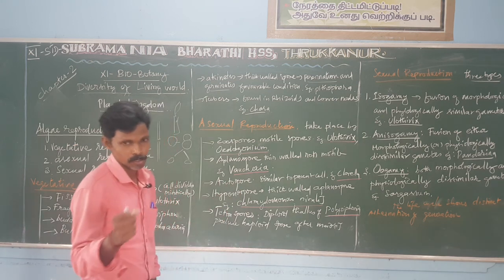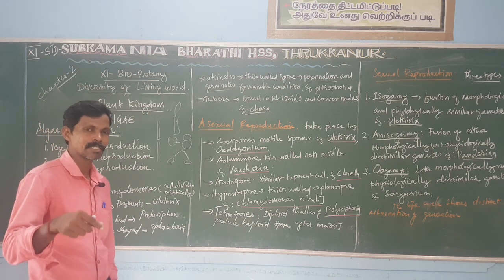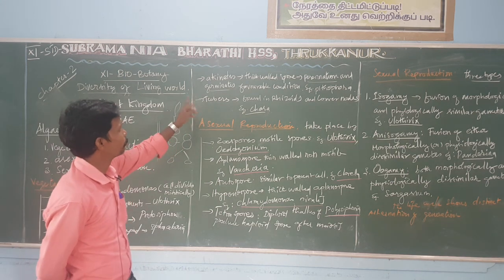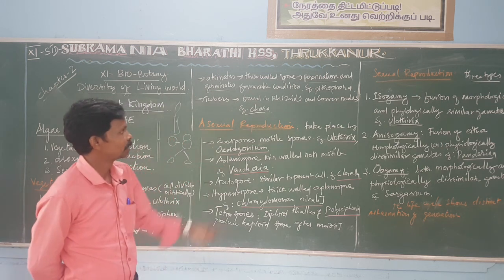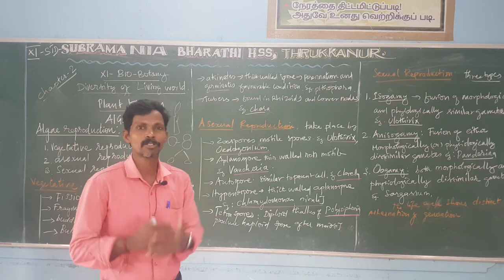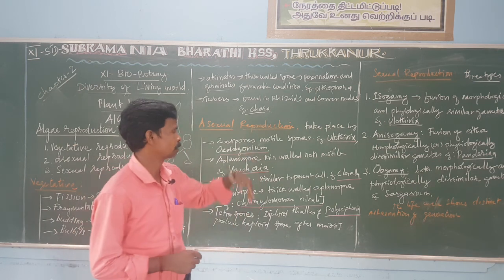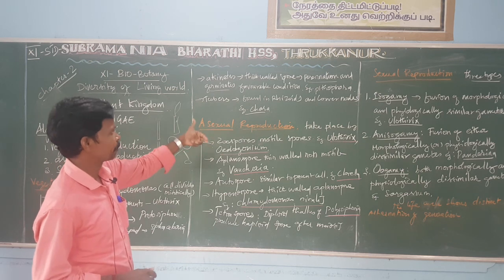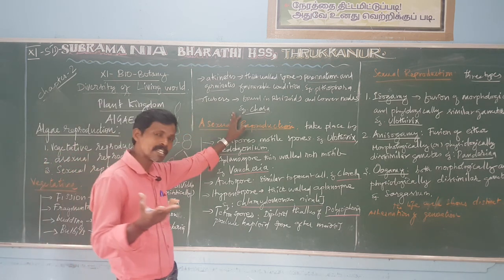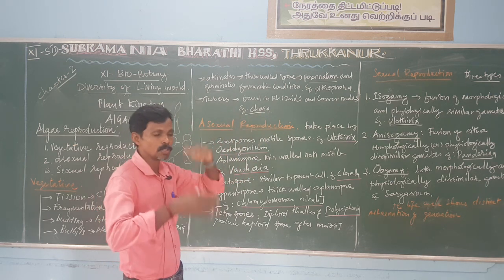One more information: I cannot draw diagrams on the board, so whenever you are watching this class, you should watch along with your textbook. The tubers are found in rhizoids and lower nodes. Node means the part between two internodes. That is a characteristic feature of Chara.